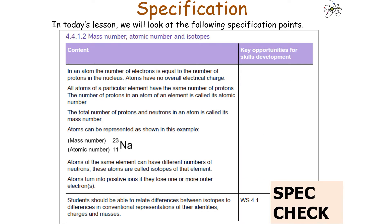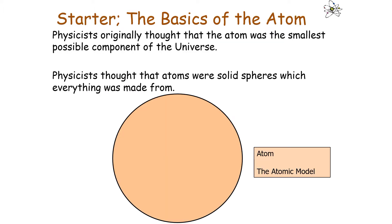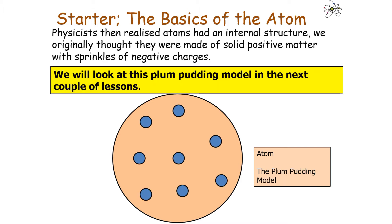We're looking at specification section 4.4.1.2 — mass number, atomic number, and isotopes. Physicists originally thought that the atom was the smallest possible component of the universe — solid spheres which everything was made from, called the atomic model. But then physicists realised that atoms had an internal structure. They were originally thought to be made from solid positive matter with sprinkles of negative charges, called the plum pudding model, which we'll look at in the next couple of lessons.